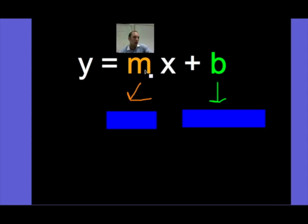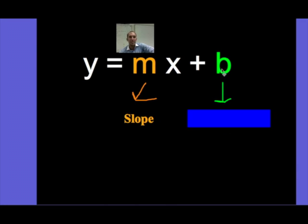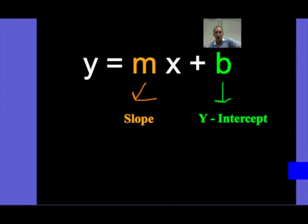y equals mx plus b. What does m stand for? The m stands for the slope, and the b stands for the y-intercept.